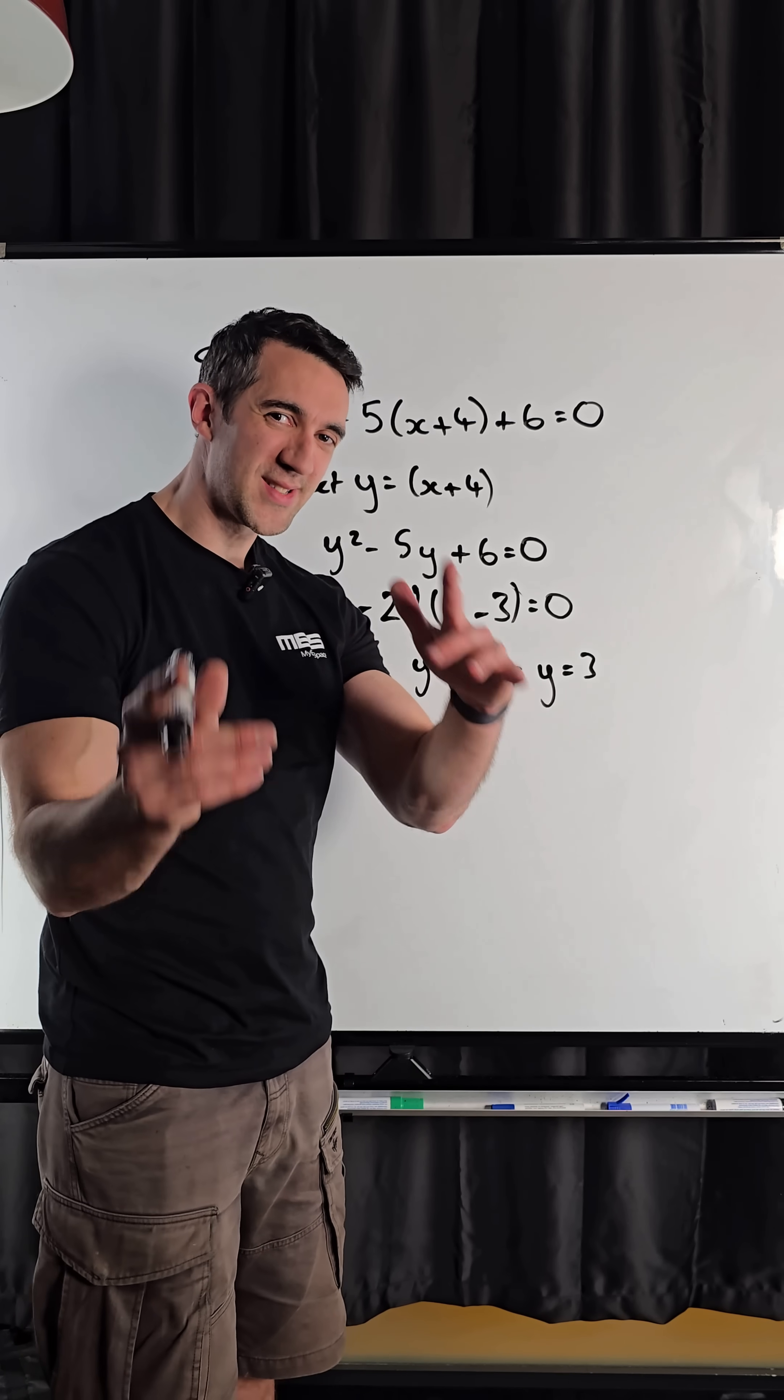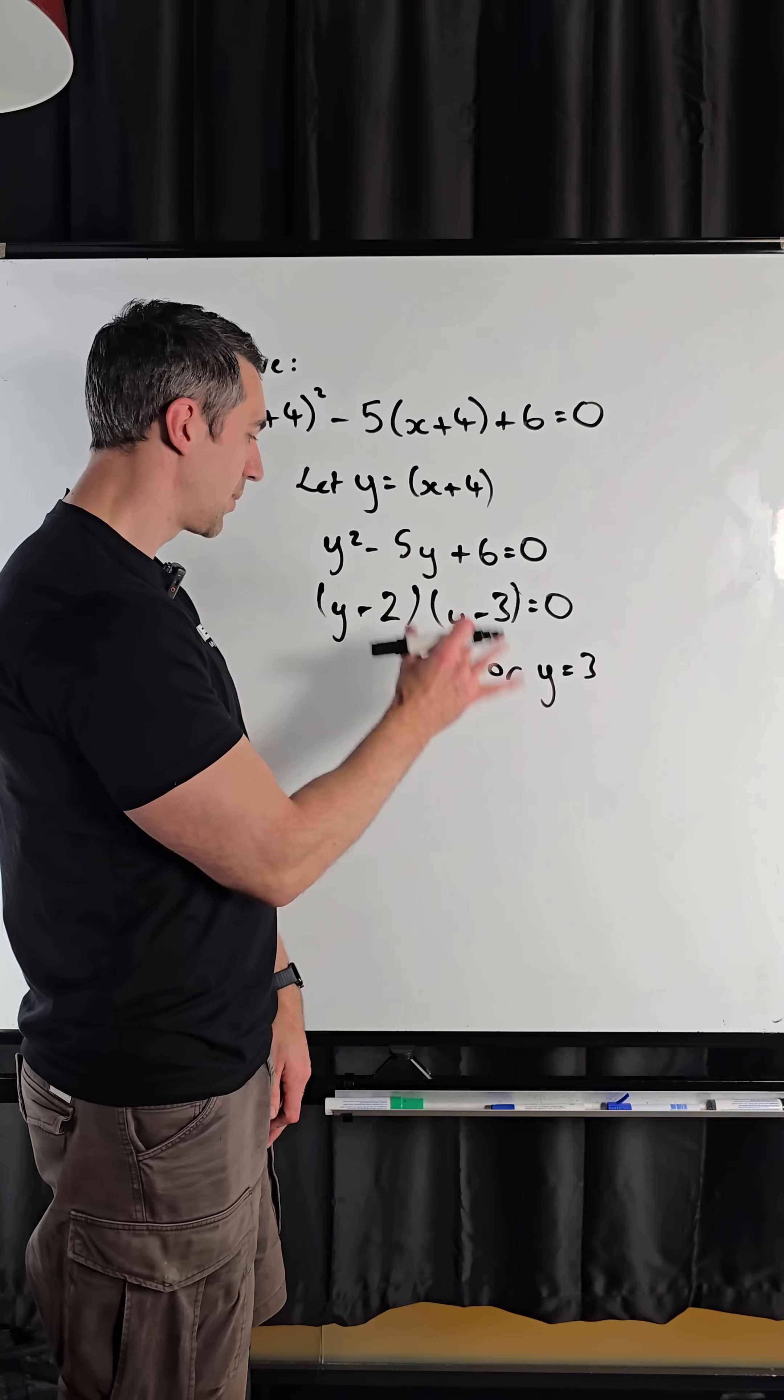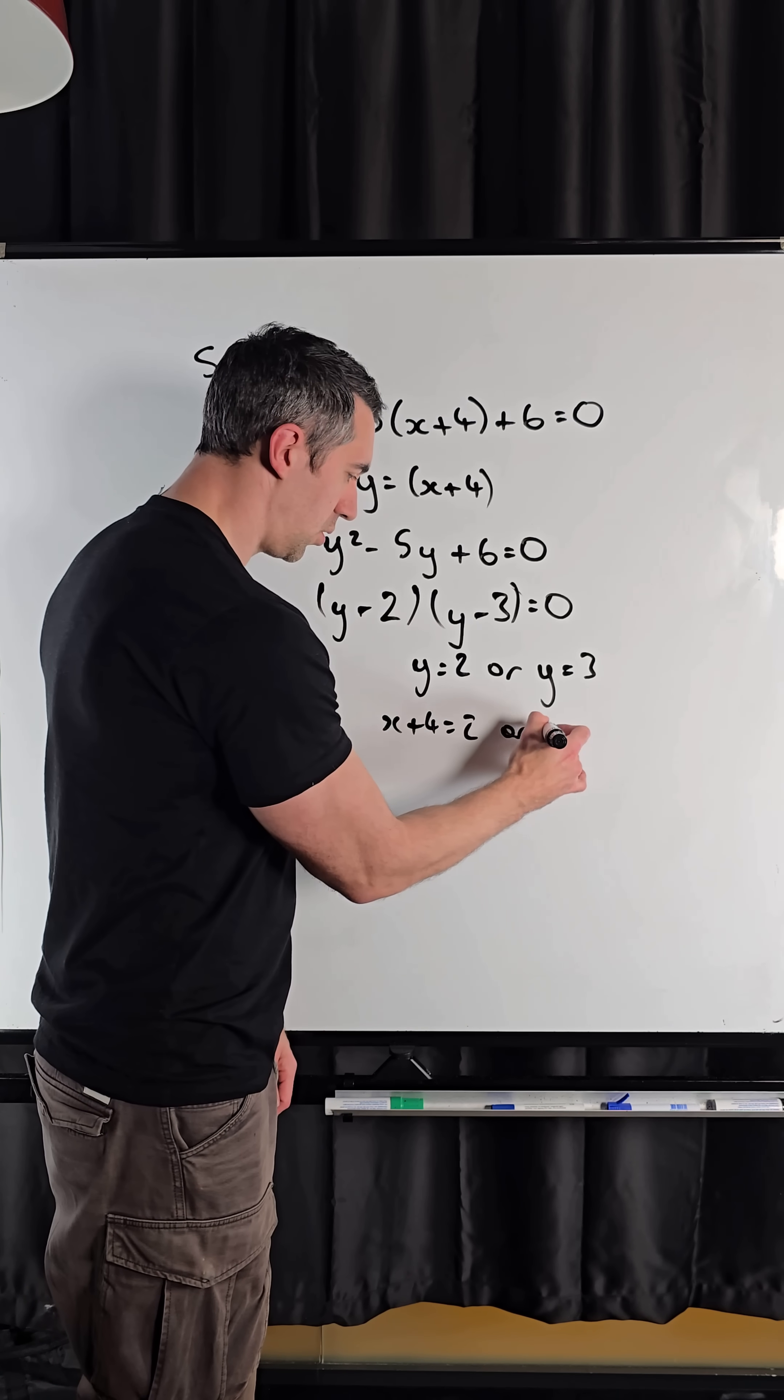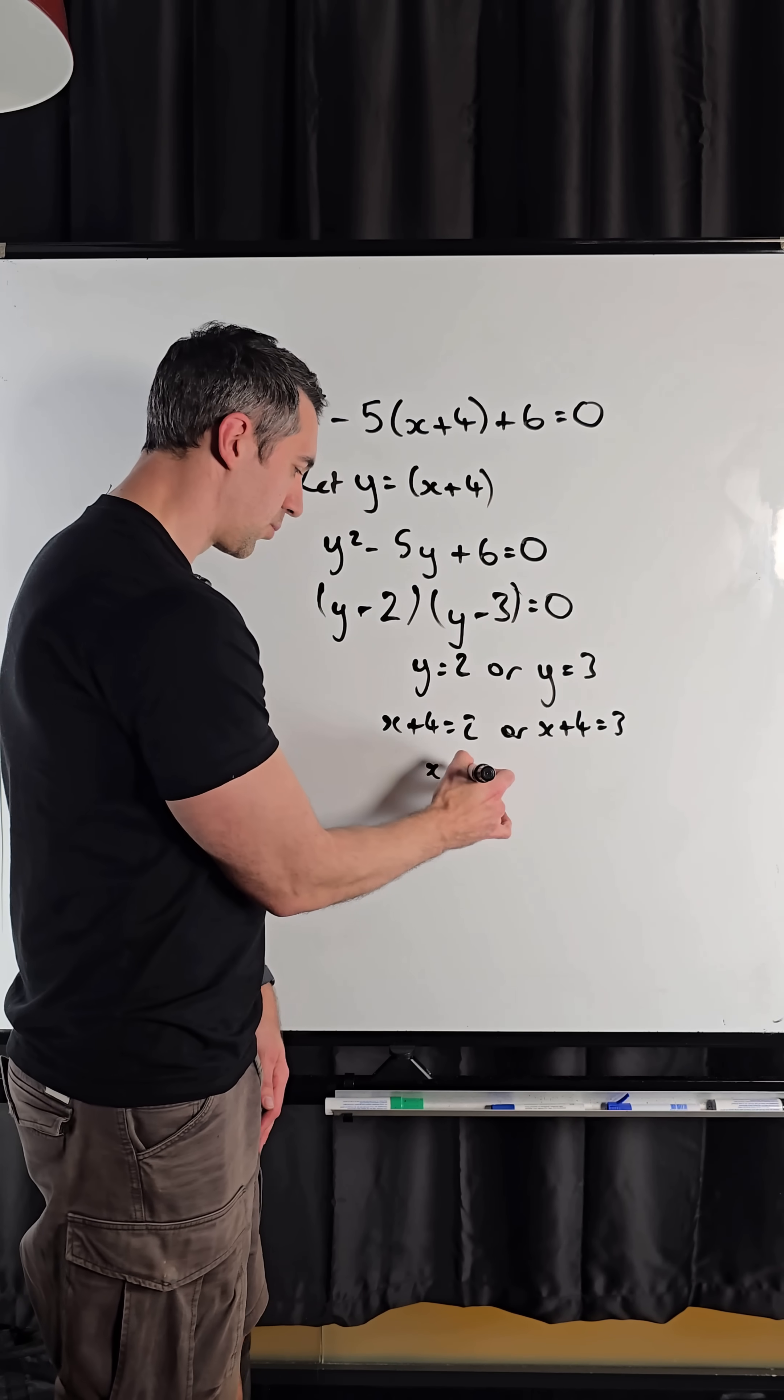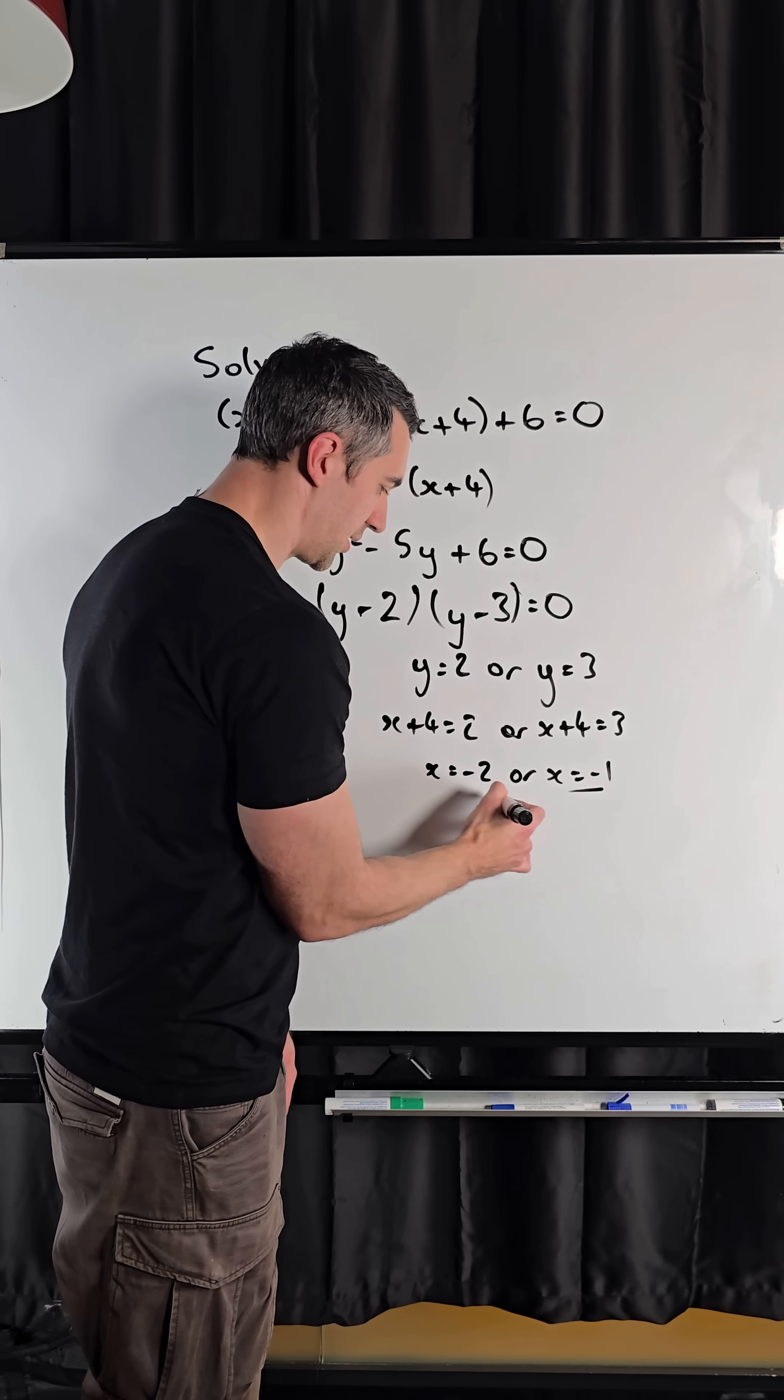Then we've got to remember to reverse that substitution we made. So we said y was equal to x plus 4. So we just replace it now and say x plus 4 equals 2 or x plus 4 equals 3. And we solve each one of those nice simple equations to get x equals minus 2 or x equals minus 1.